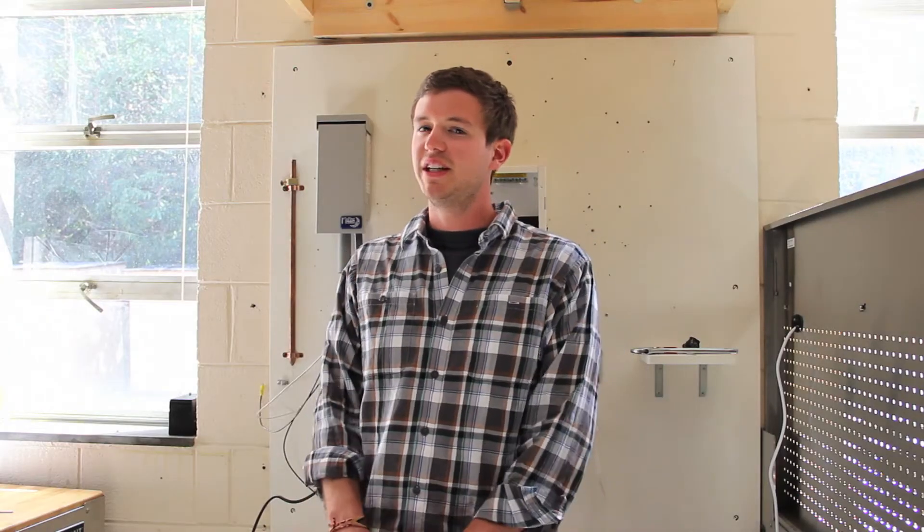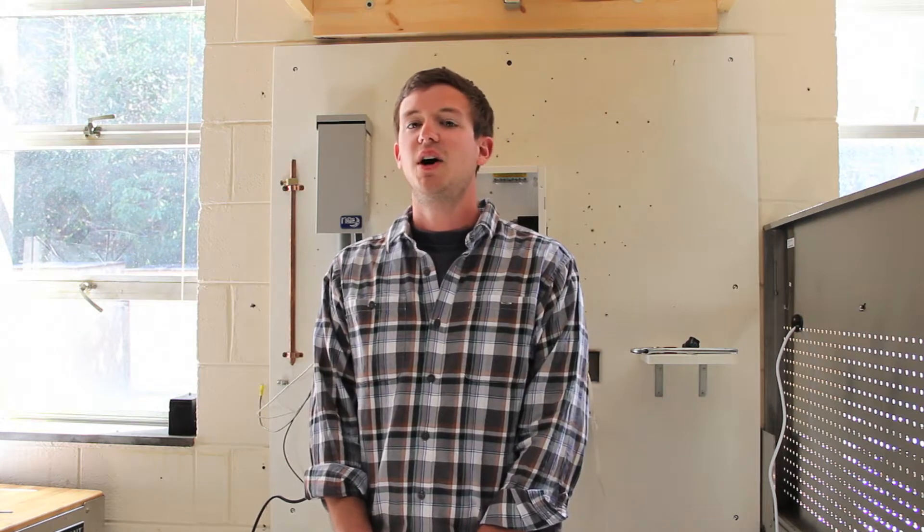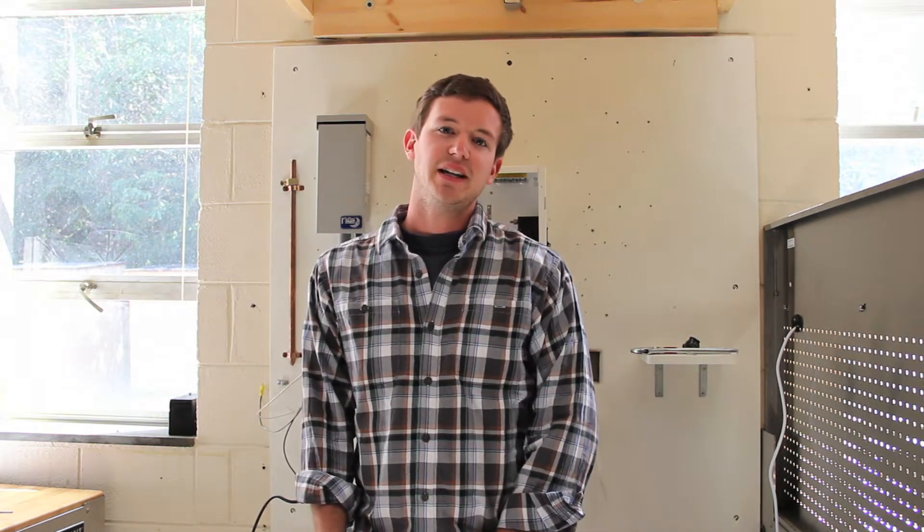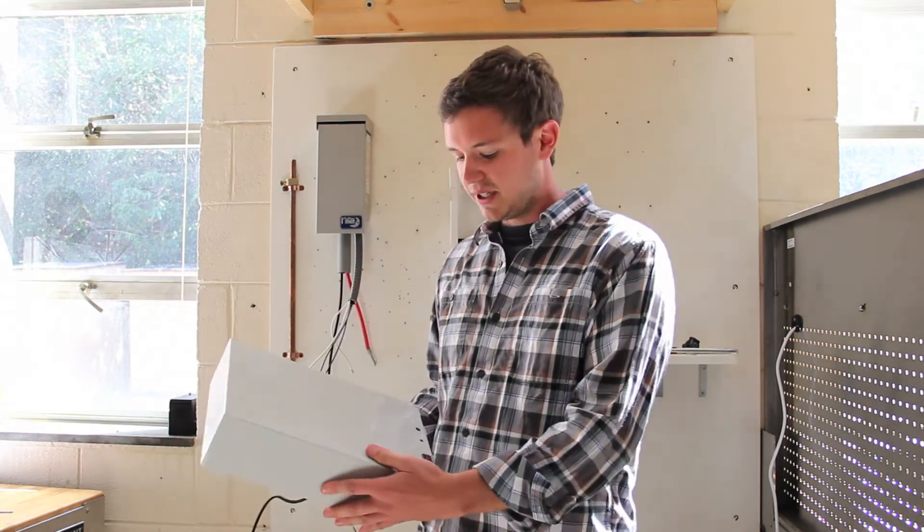Combiner boxes are used in photovoltaic arrays to combine multiple strings of modules or to wire modules in parallel in low voltage systems such as 12, 24, or 48 volt systems. There are multiple size combiner boxes.